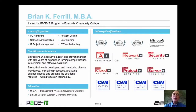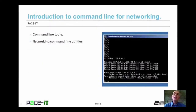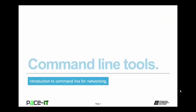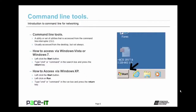I'm Brian Farrell, and welcome to PACE IT's session on command line for networking. Today, we're going to be talking about what command line tools are and then discuss some networking command line utilities. Command line tools are a utility or set of utilities accessed from the command line interpreter — usually from the desktop. To access them in Vista, click Start, then type command or CMD in the run box. In Windows XP, click Start, then Run, then enter CMD or command.